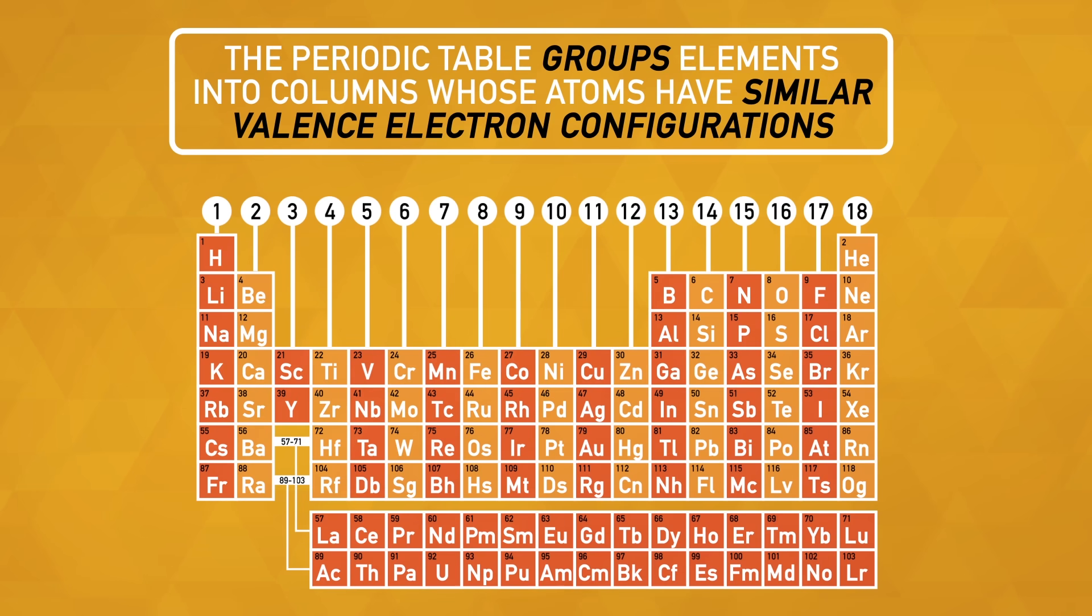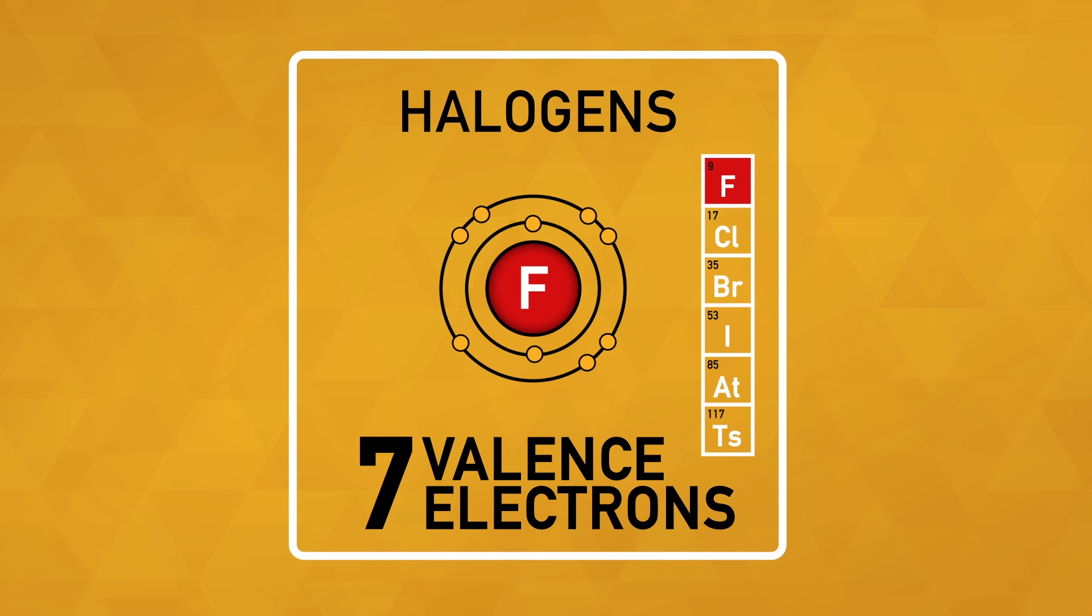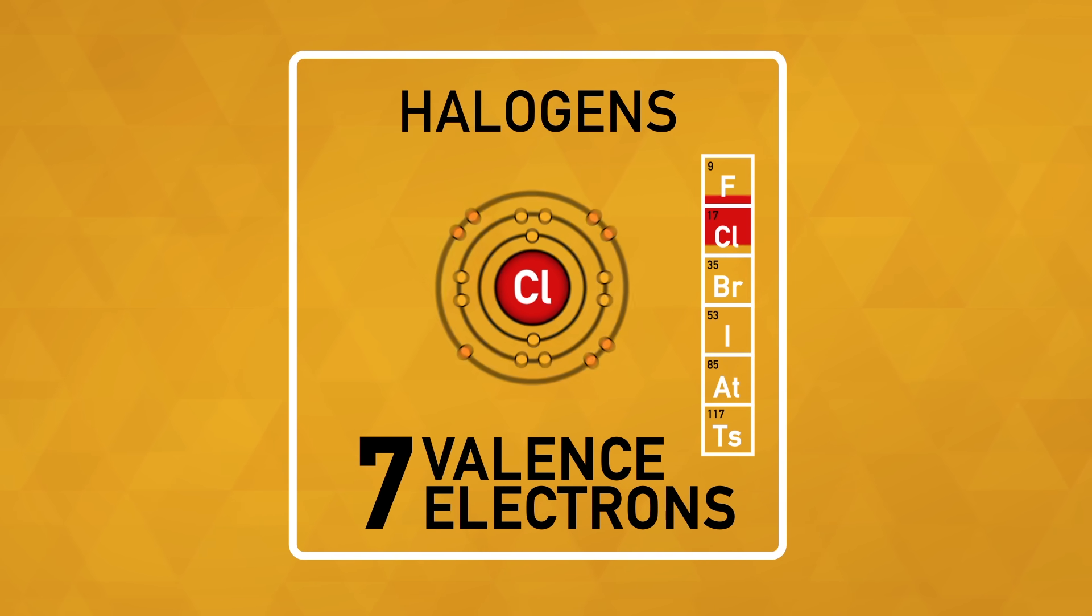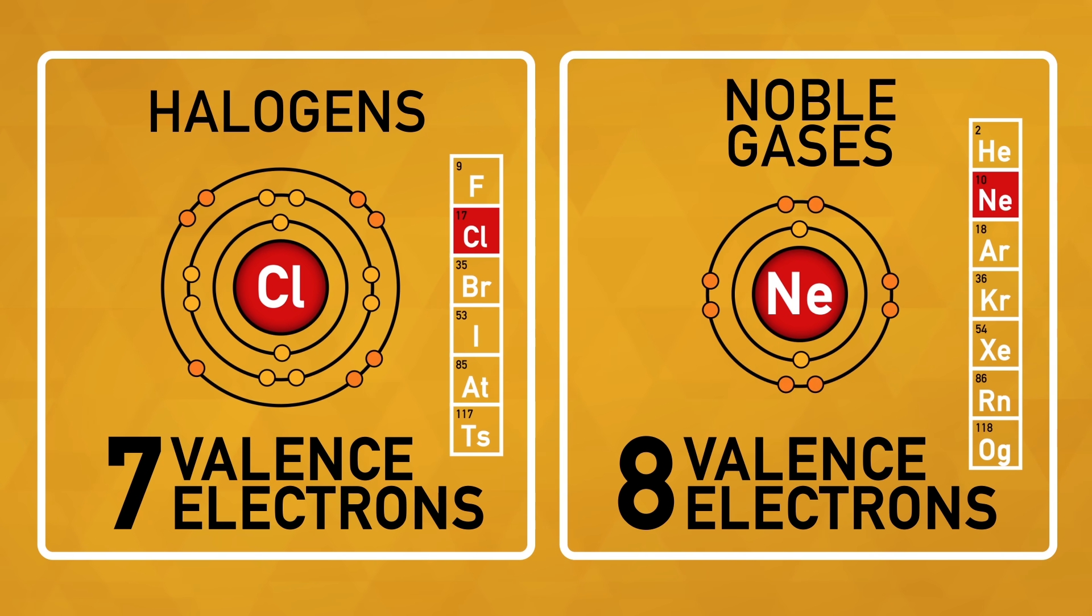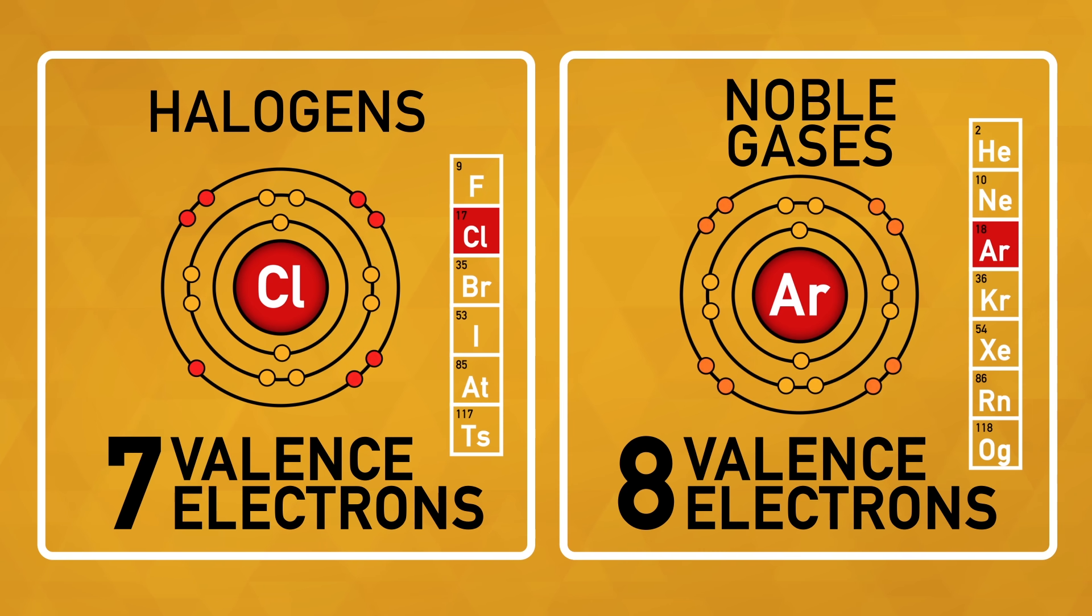The periodic table groups elements into columns whose atoms have similar valence electron configurations, and therefore similar chemistry. In the case of the halogens in column 17, each of the elements has 7 valence electrons. The noble gases in column 18 all have 8 valence electrons.